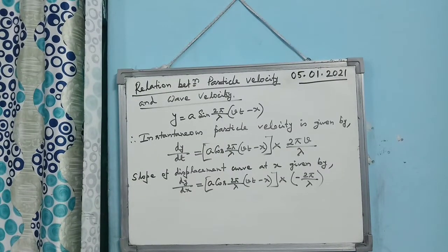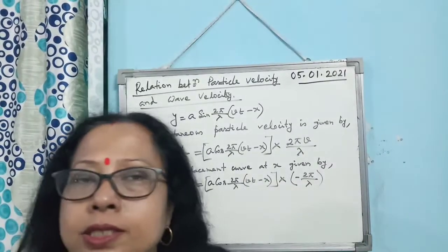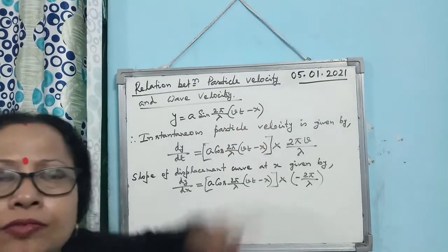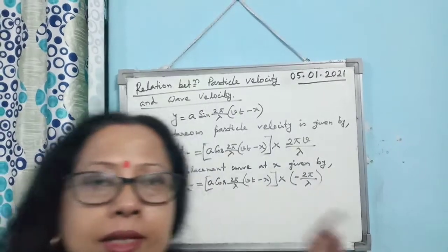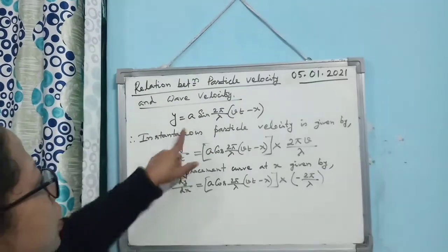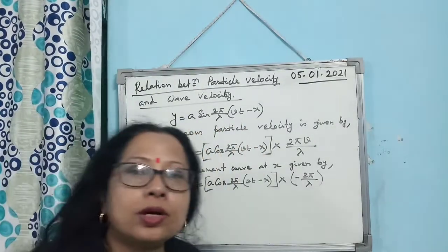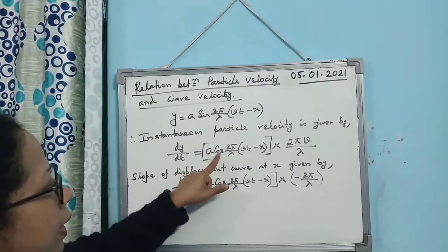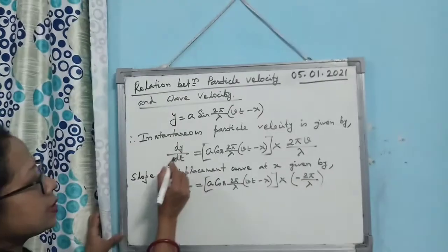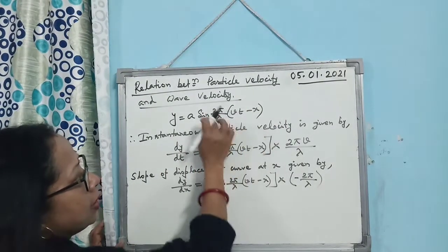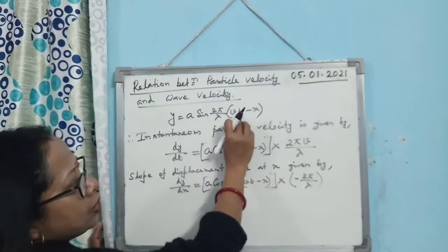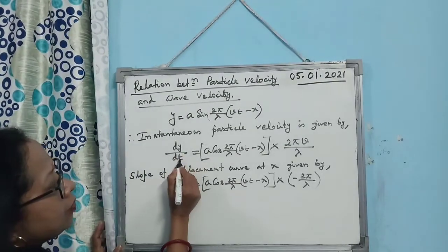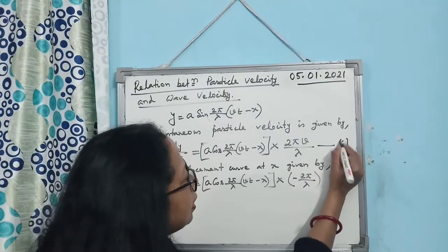Next is the relation between particle velocity and wave velocity. The displacement of a particle is y = A sine(2π/λ)(vt minus x). The instantaneous velocity of the particle is dy/dt. Taking the derivative, this becomes A cos(2π/λ)(vt minus x) multiplied by the derivative of the argument with respect to t, which gives 2πv/λ. So dy/dt = A·(2πv/λ)·cos(2π/λ)(vt minus x). Let this be equation 1.